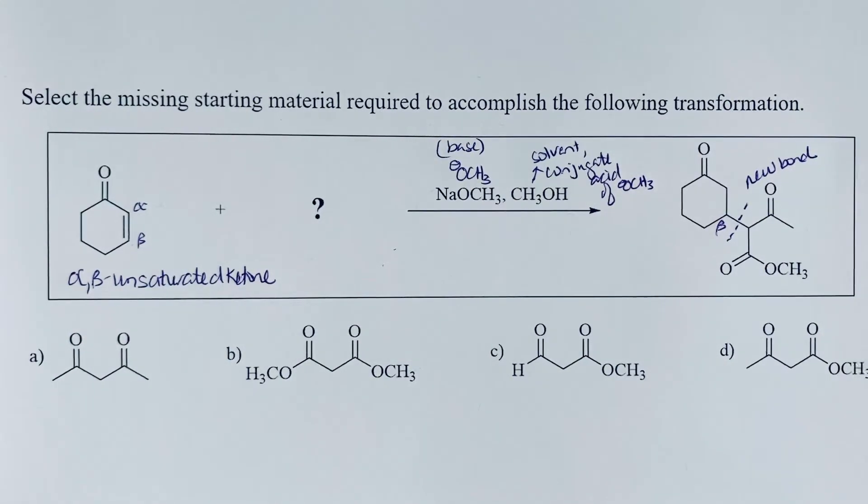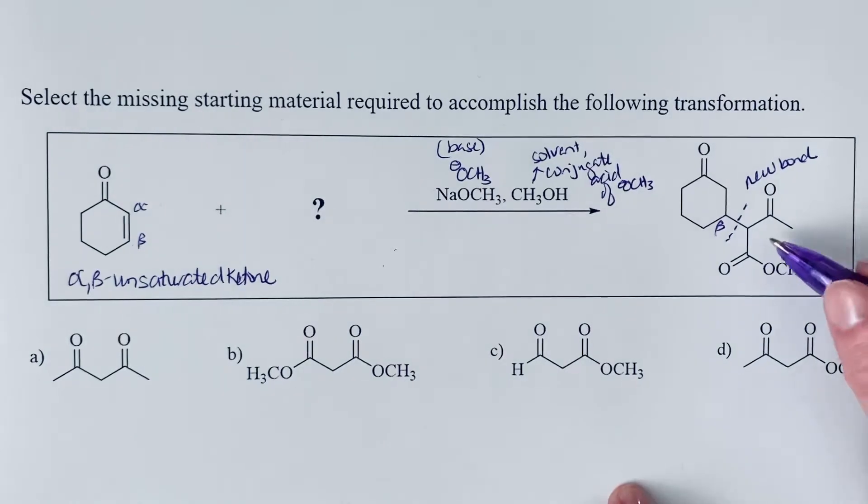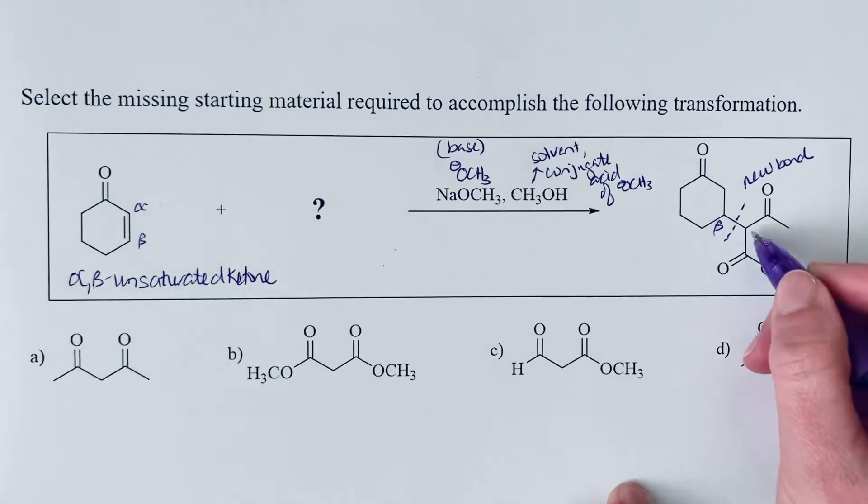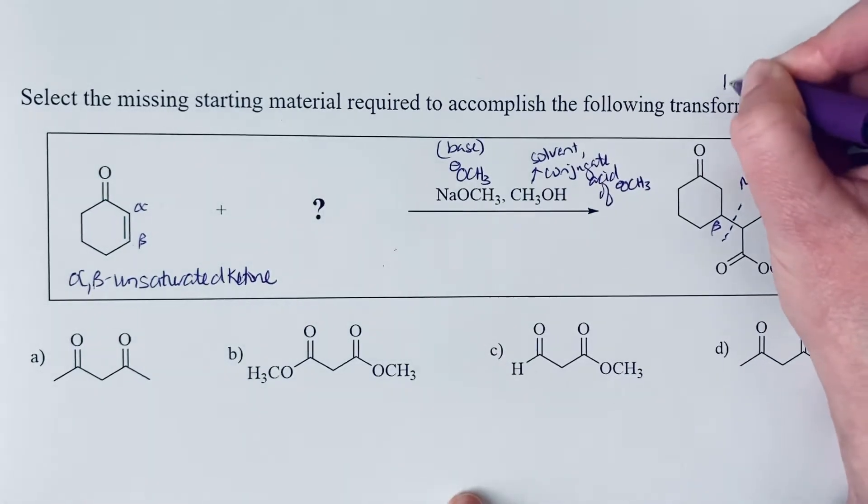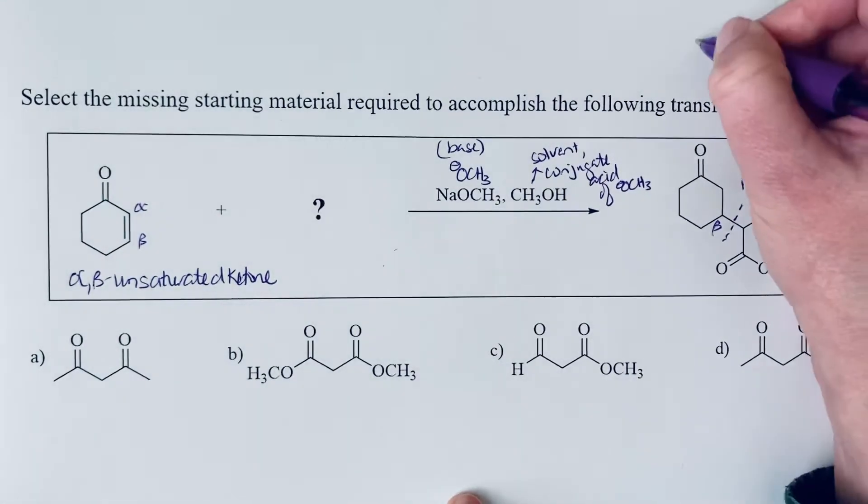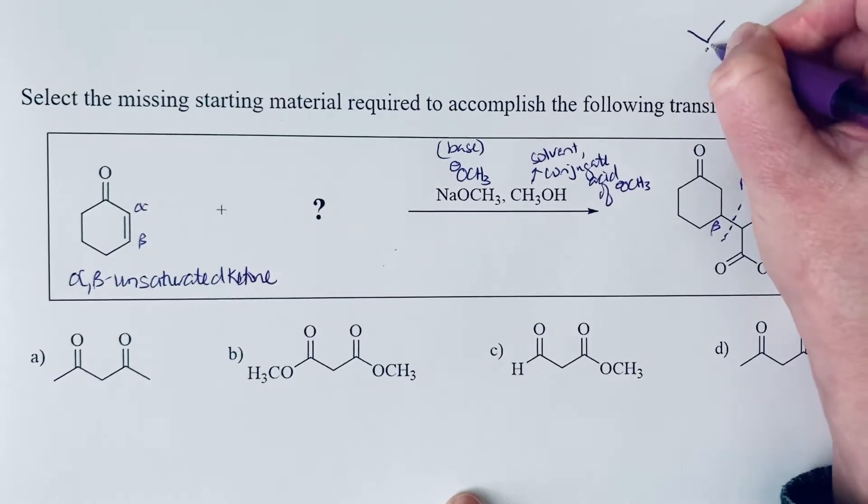So we just want to take a look and see what it is that we have. So if we want to determine what nucleophile we needed, we just need to look at this piece. So we need between those two carbonyls to have a negative charge.